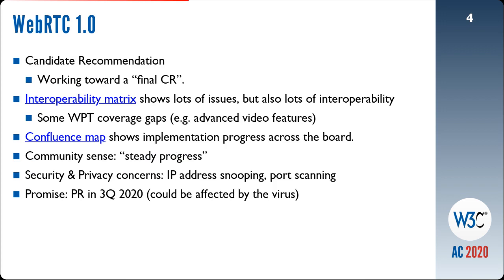Measurements indicate that much of the usage of the WebRTC API comes from trackers — applications which don't call both set local description and set remote description — so security and privacy concerns have risen in importance. Privacy concerns relate to address snooping, and port scanning is a security issue. Address snooping has been addressed by limiting access to candidate addresses in the absence of permissions. Addressing port scanning will require implementation changes and some additions to the security and privacy section of the specification.